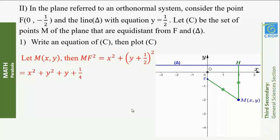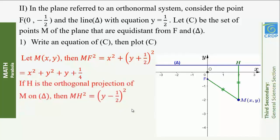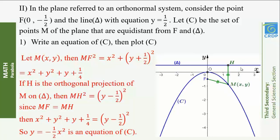M is a point of the plane equidistant from F and delta. Then MF² = x² + (y + ½)² = x² + y² + y + ¼. If H is the orthogonal projection of M on delta, then MH² = (y − ½)². Since MF = MH, then x² + y² + y + ¼ = (y − ½)². So y = −½x² is an equation of C.